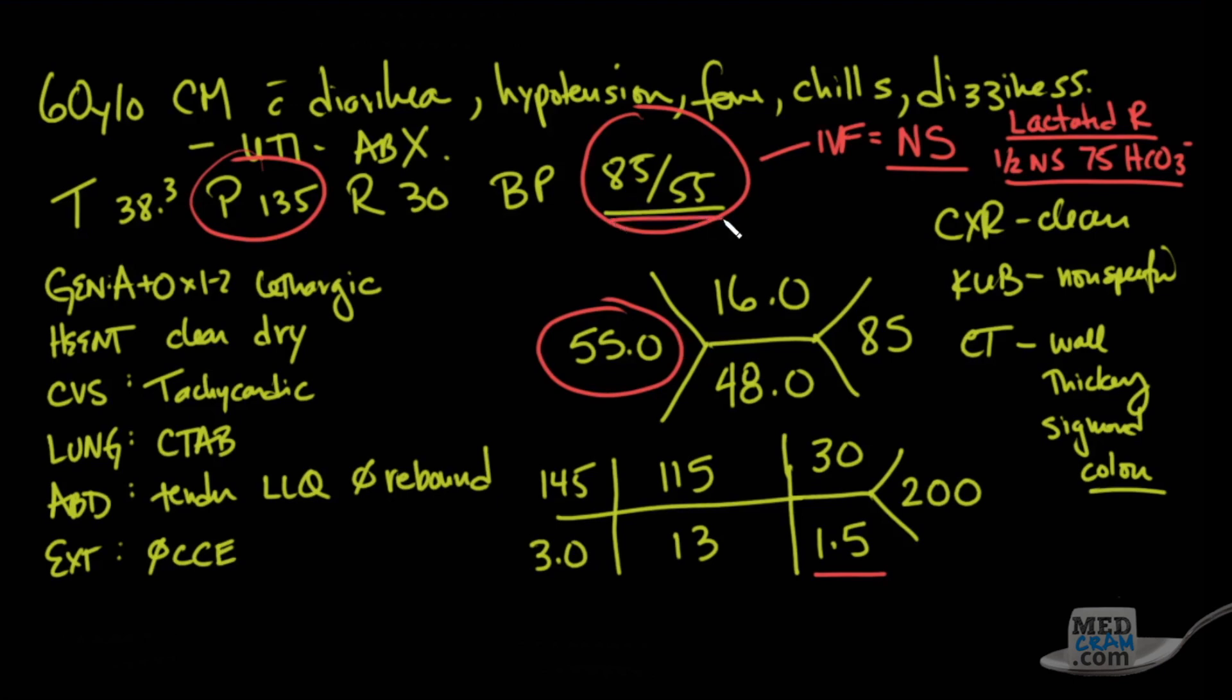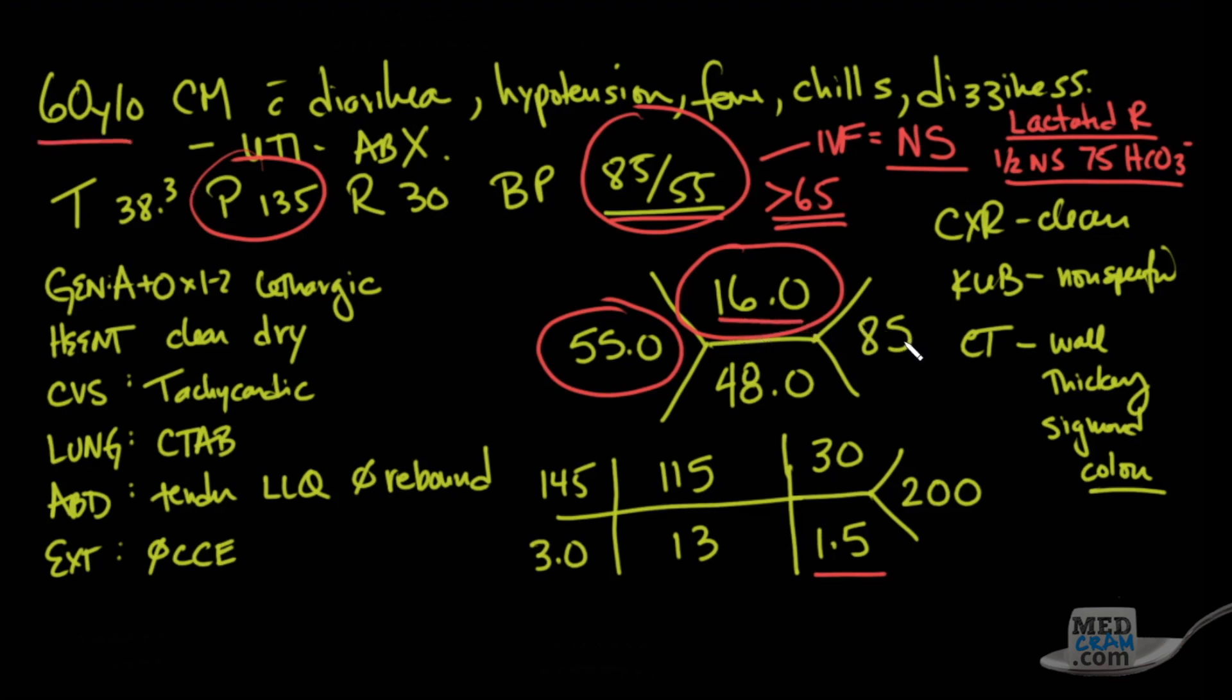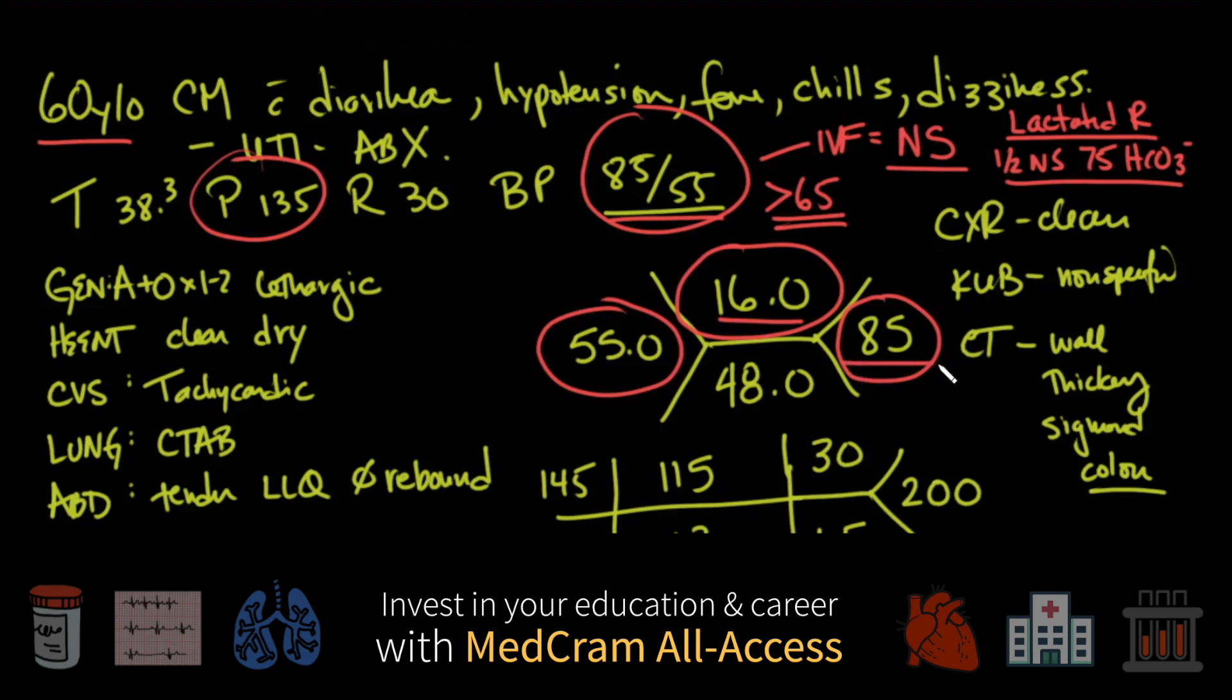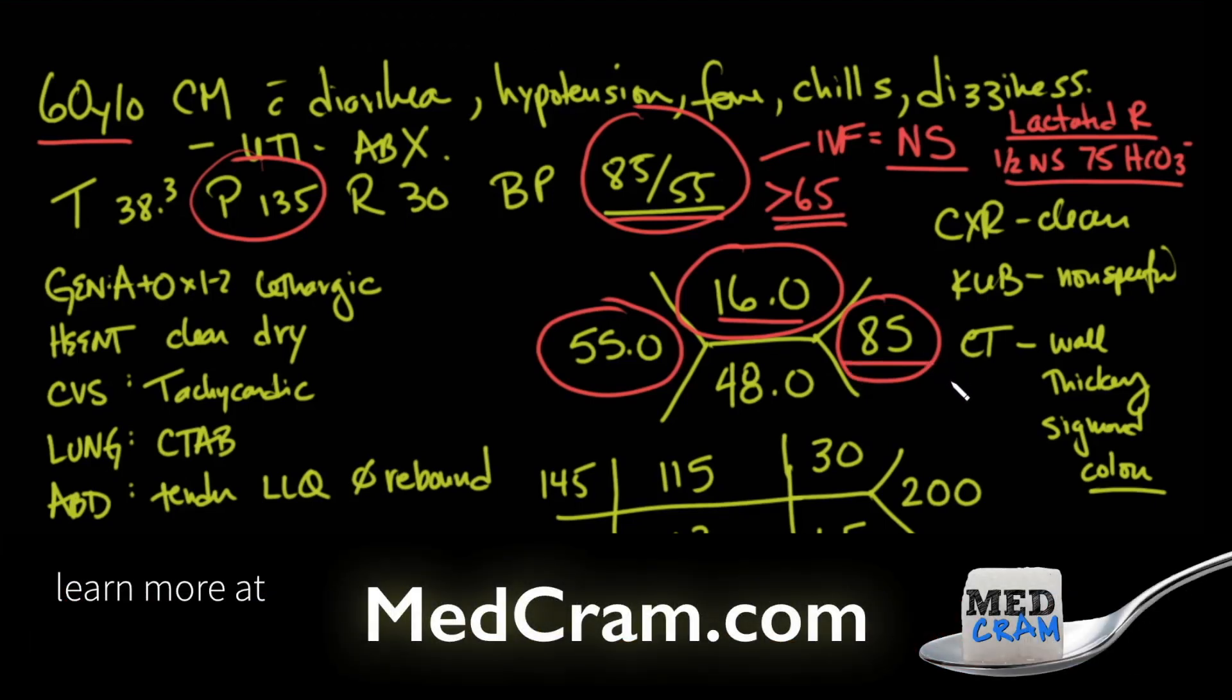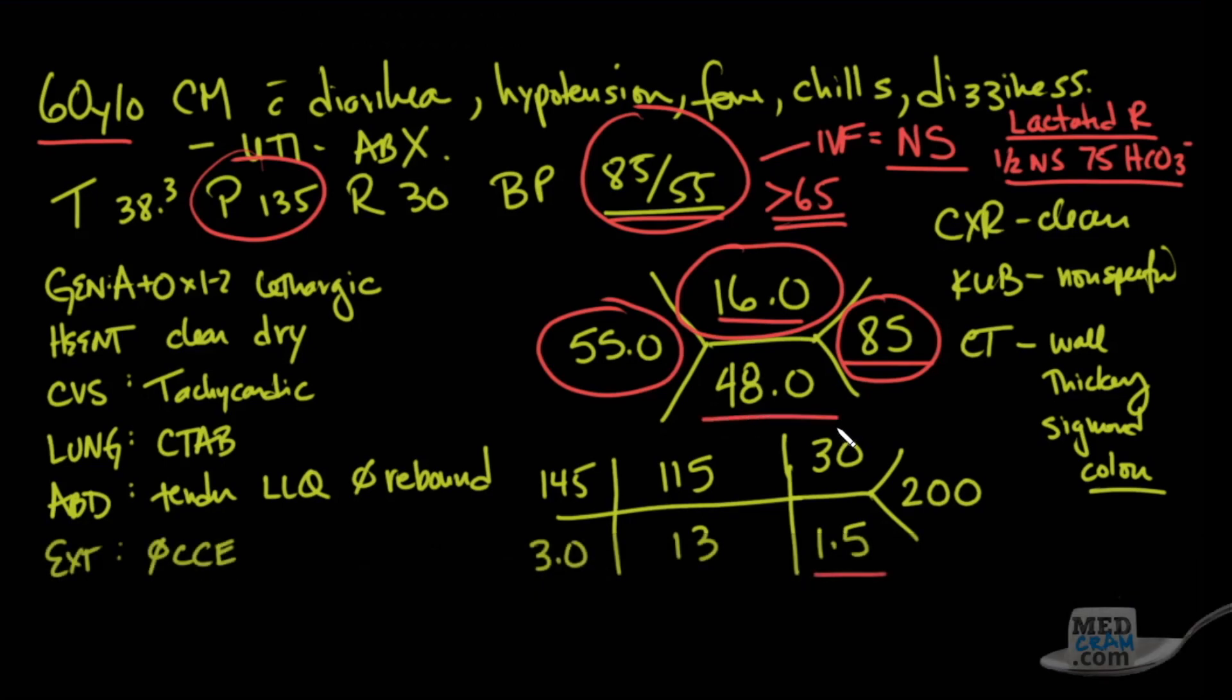If the MAP does not increase to greater than 65, then you're going to probably have to start some vasopressors through a central line and resuscitate this patient. Looking at this hemoglobin, I can see clearly that this is elevated for somebody who is so sick, and this is probably showing hemoconcentration. The low platelets are probably a result of septic shock. We could check that out by looking at the PT, INR, and PTT to see if they were elevated, and also the fibrinogen level if that was low. This is the hematocrit; it's usually going to be three times that of the hemoglobin.